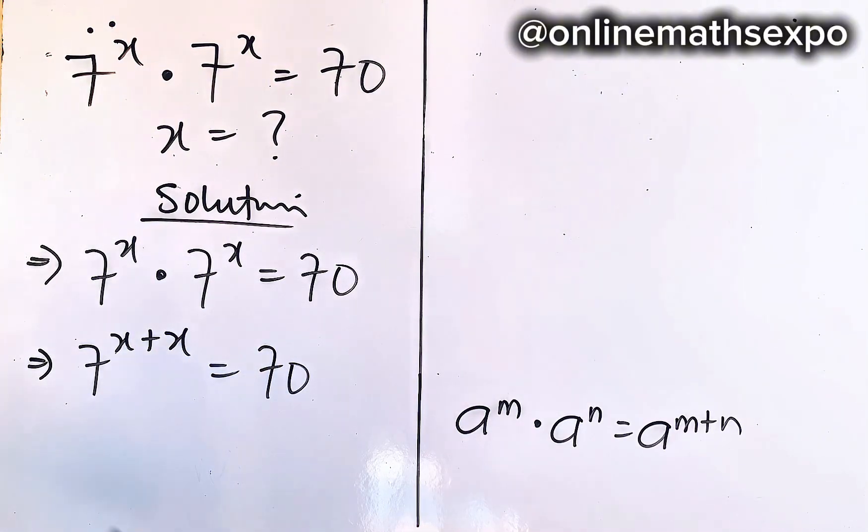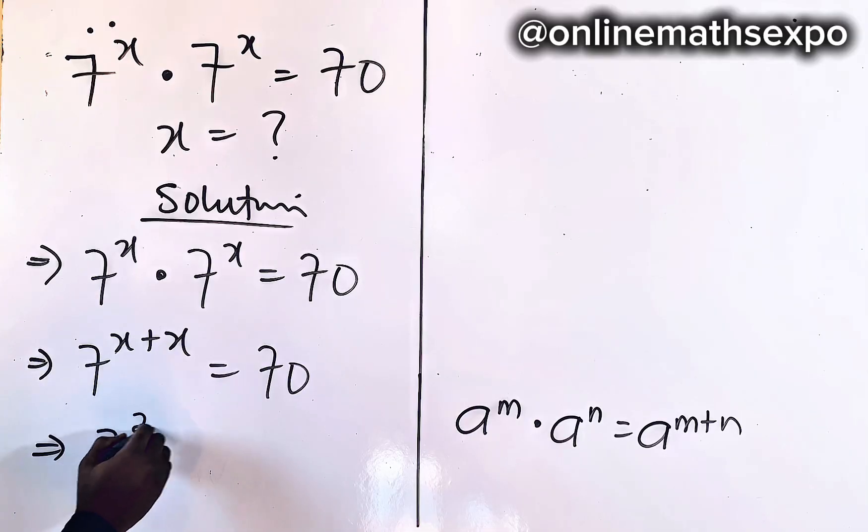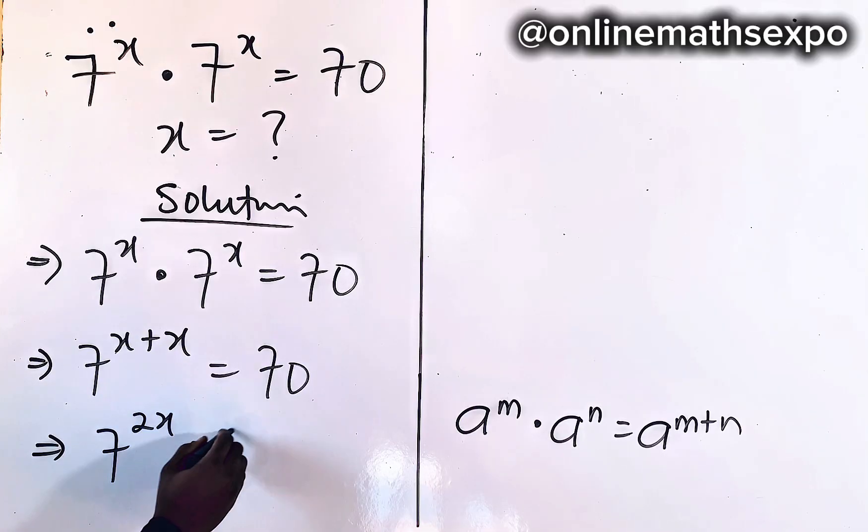What do you do? Simplify. Add x plus x — it gives you 2x. So we have 7 to the power of 2x is equal to 70.